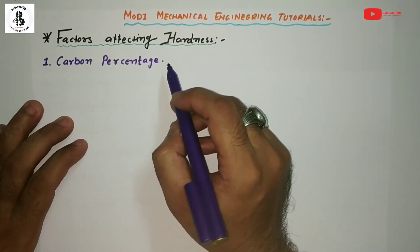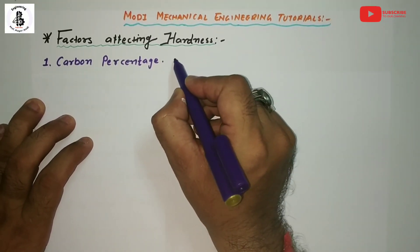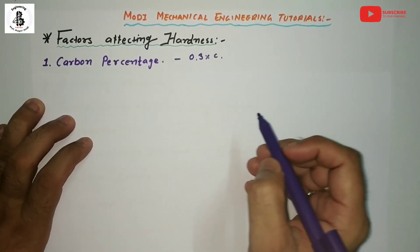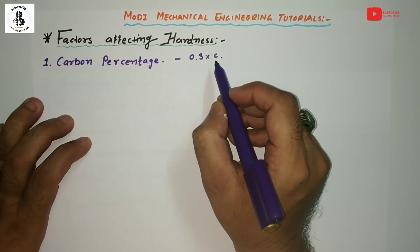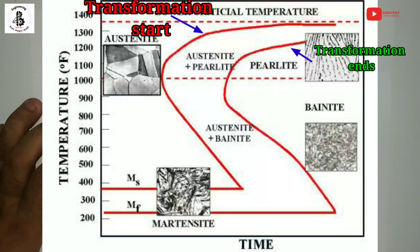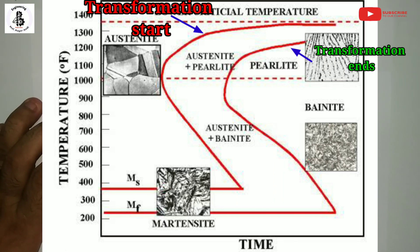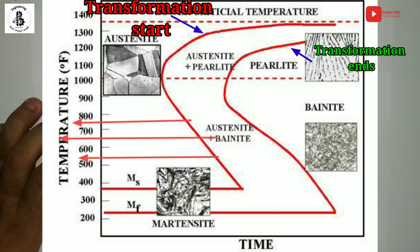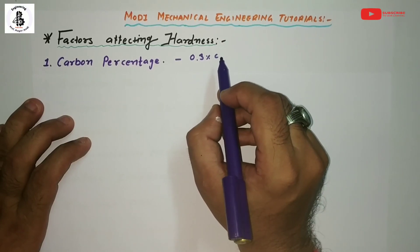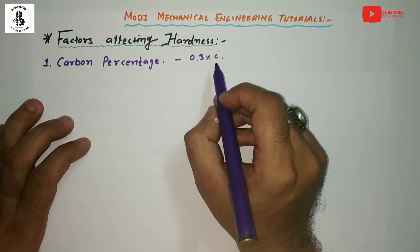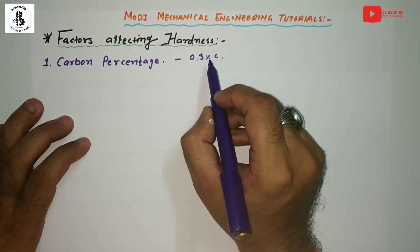First one: carbon percentage. If steels have less than 0.3% carbon, that carbon percentage will cause difficulties in making a hard structure, because as per the TTT diagram, there will be a transformation start line and a transformation end line. By reducing the carbon percentage, those lines shift towards the temperature axis, so there are no possibilities for performing quenching operations. We know that only by the quenching process is a hard structure formed. So less than 0.3% carbon in steels makes it difficult to produce hard material — this is one of the factors affecting hardness.